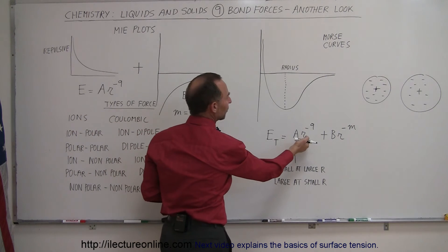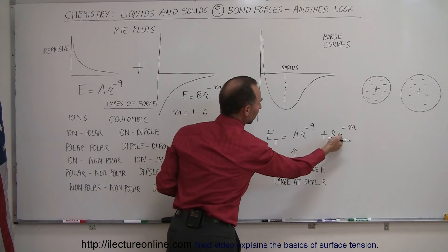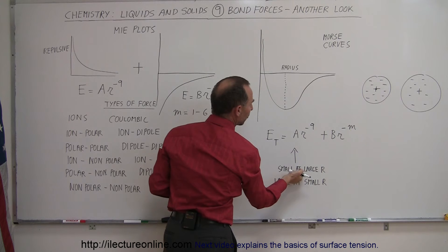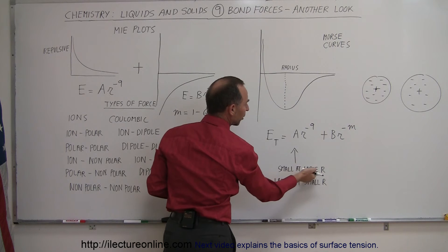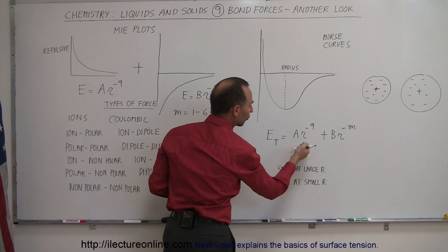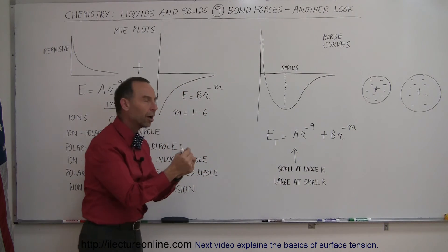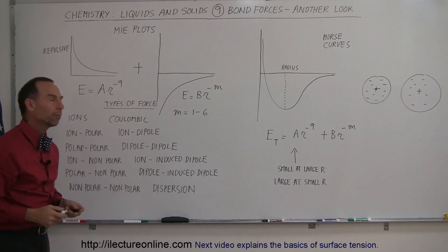The total energy is simply a sum of the repulsive energy plus the attractive energy. Notice that the repulsive forces are very small at large distances, are very large at short distances, so they cause the perfect equilibrium point to be found.